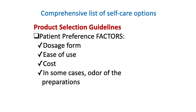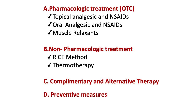Here is a comprehensive list of self-care options. When doing product selection, always determine patient preference factors — what dosage form they prefer, whether they can take capsules or tablets, or for younger patients, syrups may be preferred. Also consider cost and odor of the preparation. For pharmacologic treatment, OTC options include topical analgesics, NSAIDs, and oral analgesics. Non-pharmacologic treatments include thermotherapy such as hot or cold compress, the RICE method, and complementary and alternative therapies.